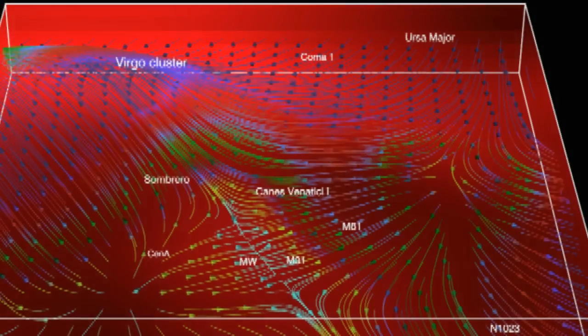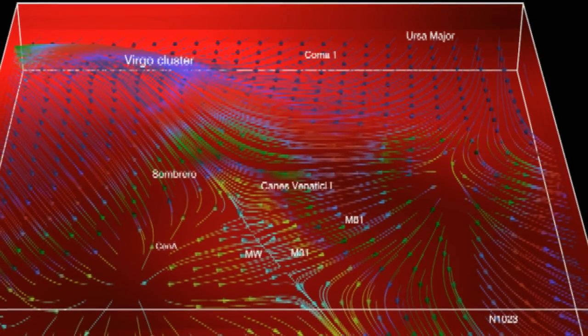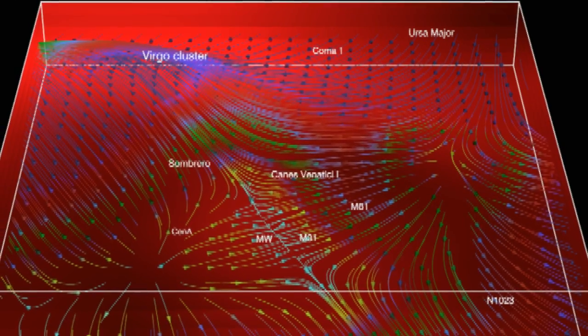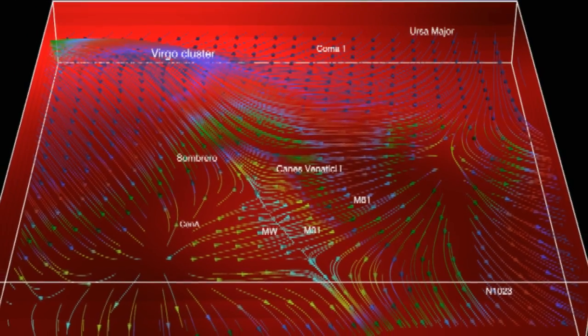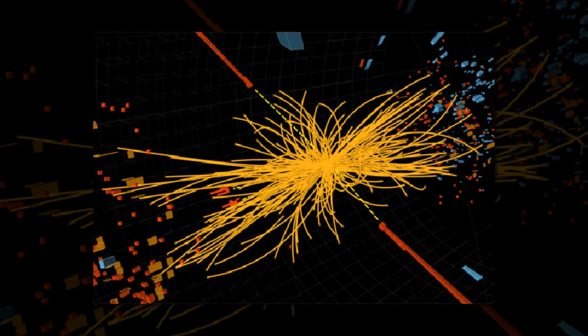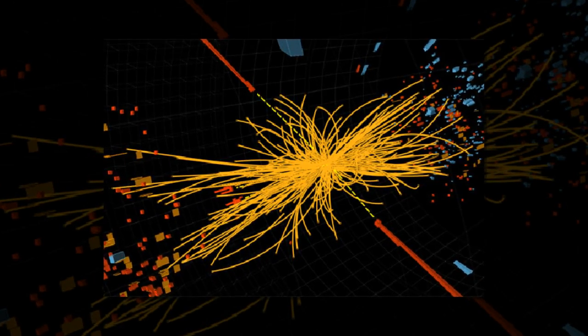Such structures are not a naive outcome of the cold dark matter model that most cosmologists believe is responsible for how the universe forms galaxies. These structures are thus a challenge to the current doctrine. One possibility is that these small galaxies echo the geometry of structure on much greater scales.